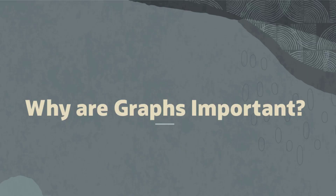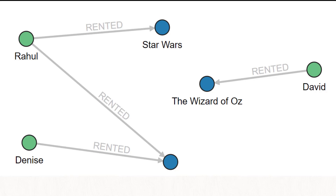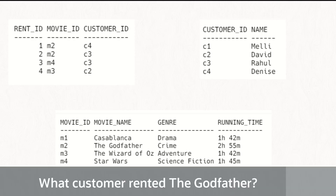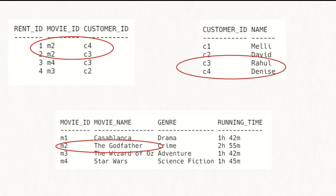So why are graphs important? Graphs are important because they help us represent data in tables as a graph. The table format with rows and columns is normally what we use to store data, but it's difficult to identify patterns in a table. If we want to answer a question like 'what customer rented the Godfather movie?', we need to search the movie table for the Godfather, find that it is movie ID M2, go to the rented table to find M2, identify that C4 and C3 are the customers who rented it, and then go to the customer table to get their names. The information is distributed across three tables.